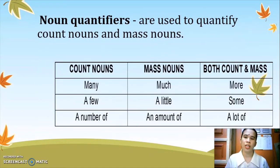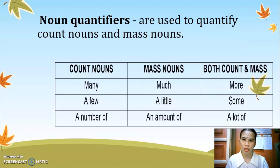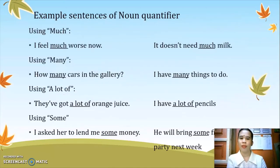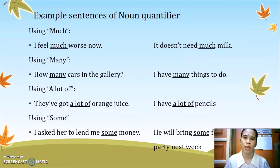Partitive nouns also have noun quantifiers that are used to quantify count nouns and mass nouns. These are a few words in the table you could use to quantify nouns. For example, using 'much': the sentence is 'I feel much worse now.' You can't measure the words that you feel, but you can quantify it using the noun quantifier 'much.'